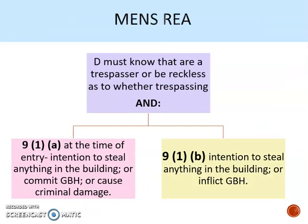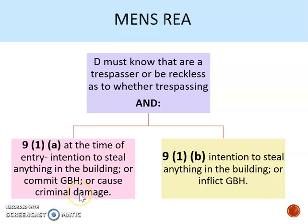Moving on to the mens rea of burglary: the actus reus requires entry of a building or part of a building as a trespasser. For mens rea, the defendant must know that they are a trespasser, or be reckless as to whether they are trespassing. Recklessness means they're taking a risk that they might be trespassing but doing it anyway. The mens rea then changes depending on whether it's a 9-1-A or 9-1-B. Section 9-1-A requires intention to commit one of the ulterior offences — stealing, GBH, or criminal damage — and that intention must be present at the time of entry. For Section 9-1-B, the requisite mens rea of the ulterior offence must be present when they are already inside.